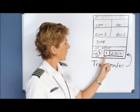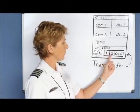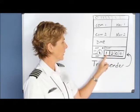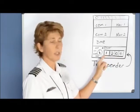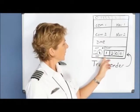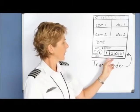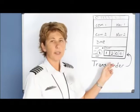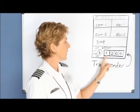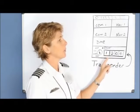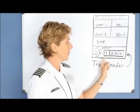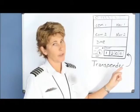The transponder has a place for four digits and each digit — or each box — could be zero through seven. Often they will refer to it as a 4096 transponder, and that just means that there are 4096 possible combinations of numbers that you could put in there.